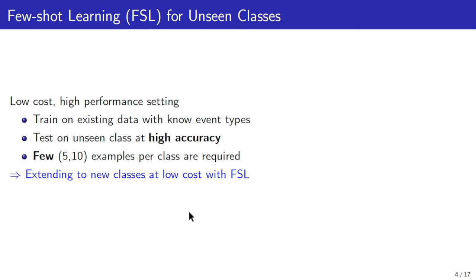Moreover, similar to human, few-shot learning requires just a few examples to learn a new concept. Therefore, we can extend event classification into new event types at a very low cost of annotation comparing to supervised learning setting.